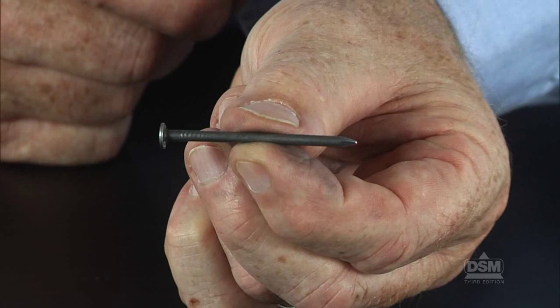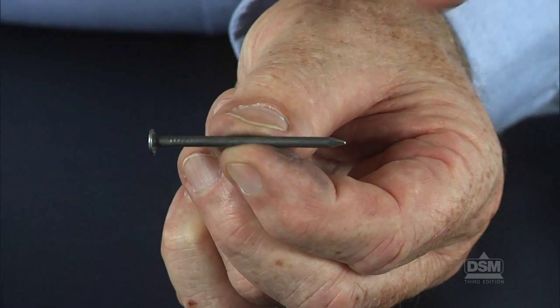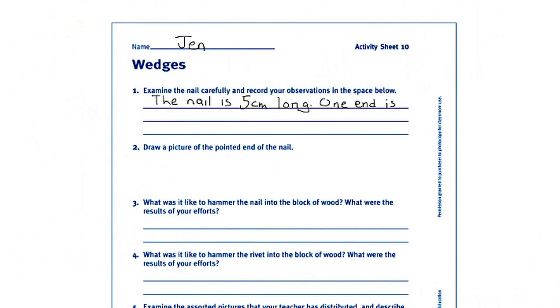Have the students inspect the nails, in particular how the two ends of the nail differ. Ask them to record their observations on the activity sheet. Descriptions should include the length, width, and shape of both ends of the nail.